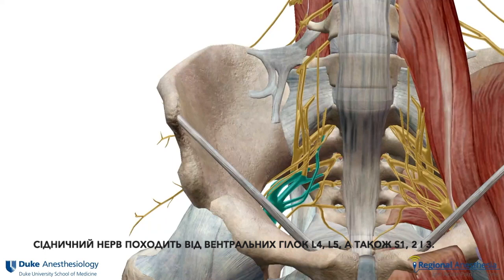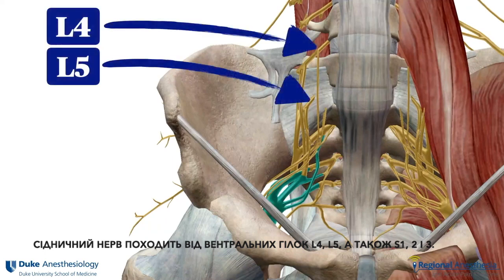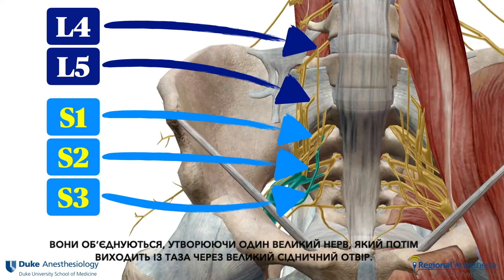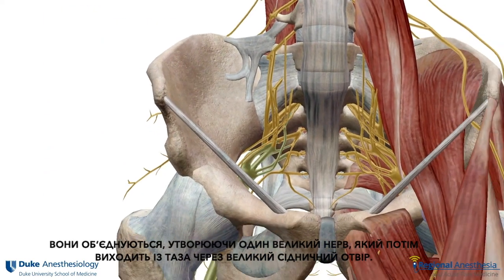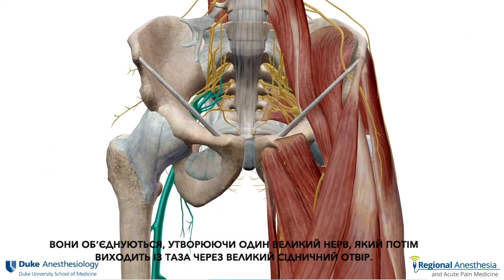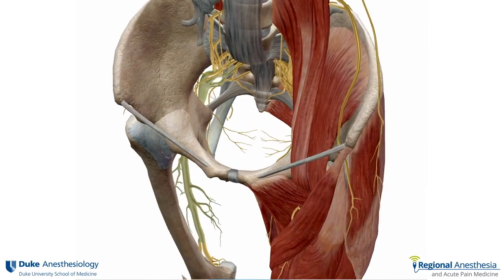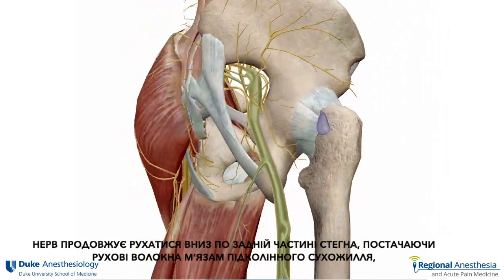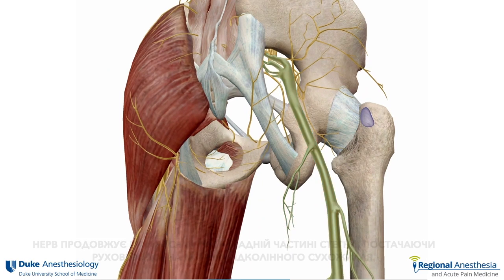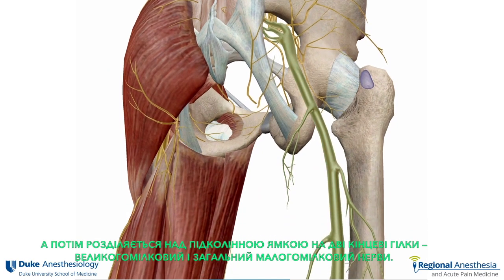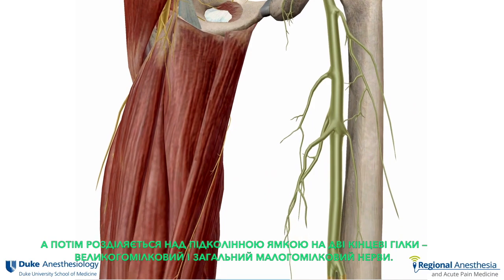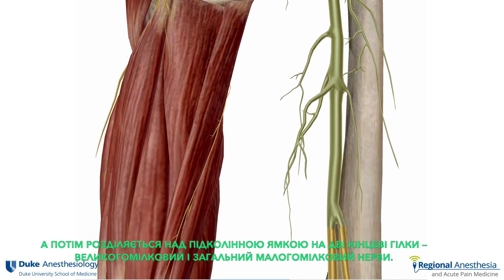The sciatic nerve is derived from the ventral rami of L4, L5, as well as S1, 2, and 3. These combine to form a single large nerve that then leaves the pelvis through the greater sciatic foramen. The nerve continues to course down the posterior thigh, supplying motor fibers to the hamstring muscles, before dividing above the popliteal fossa into its two terminal branches: the tibial and common peroneal nerves.